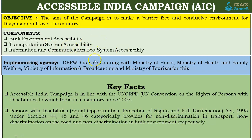For example, in the transportation system, the government is going to develop toilets which are user-friendly for Divyangjan people. The implementing agency for this scheme is the Department of Empowerment for Persons with Disabilities, and it is collaborating with the Ministry of Home, Ministry of Health and Family Welfare, Ministry of Information and Broadcasting, and Ministry of Tourism.